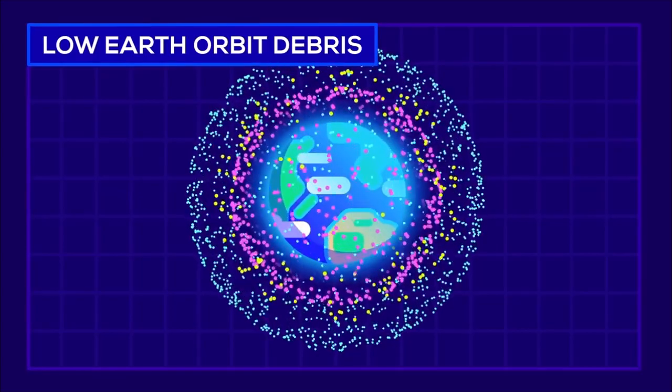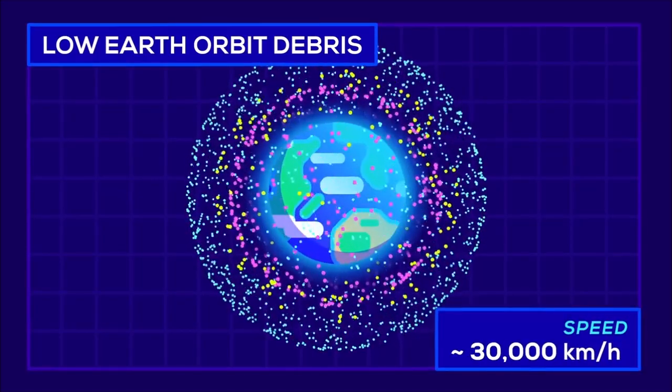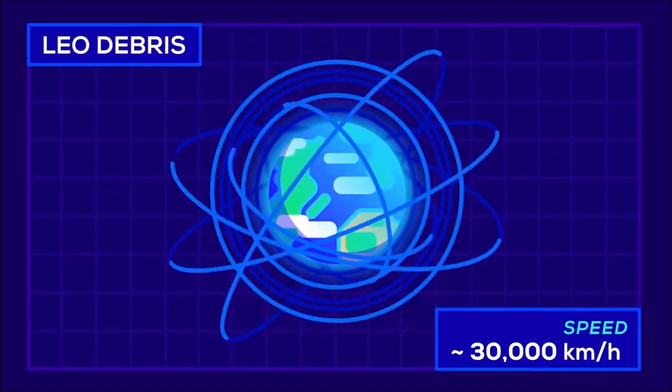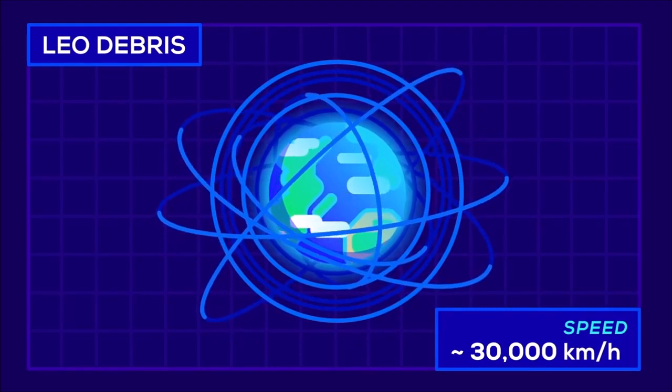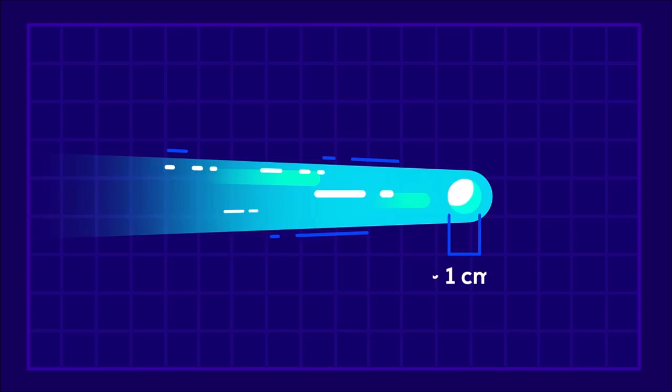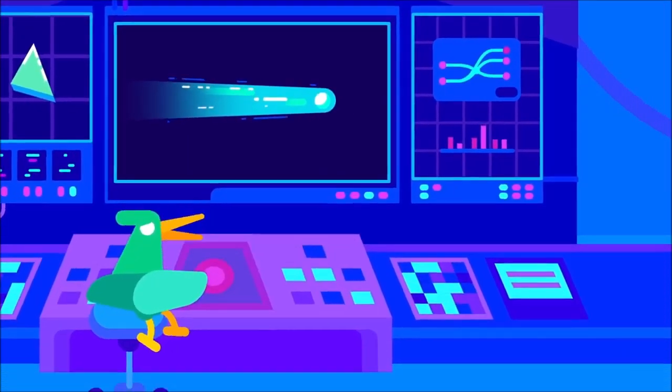This debris is moving at speeds of up to 30,000 kilometers per hour, circling Earth on criss-crossing orbits multiple times a day. Orbital speeds are so fast that being hit by debris the size of a pea is like being shot by a plasma gun.